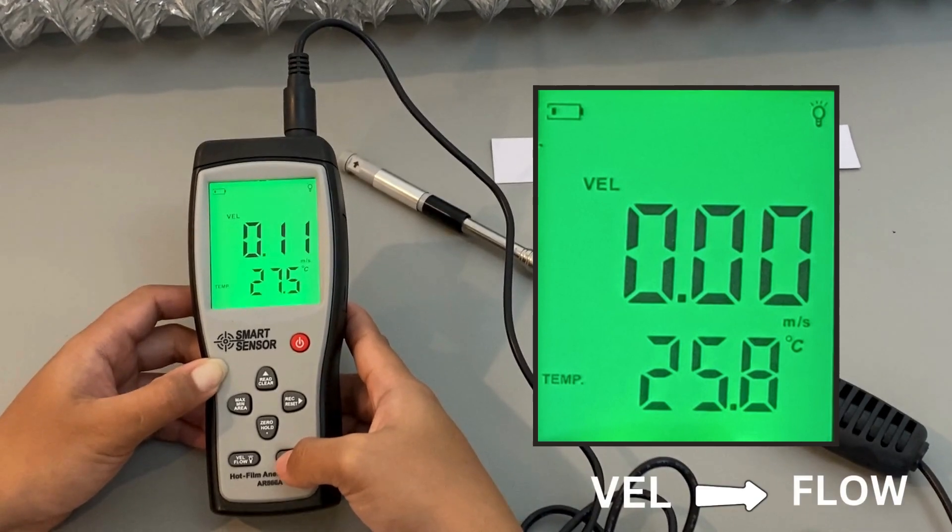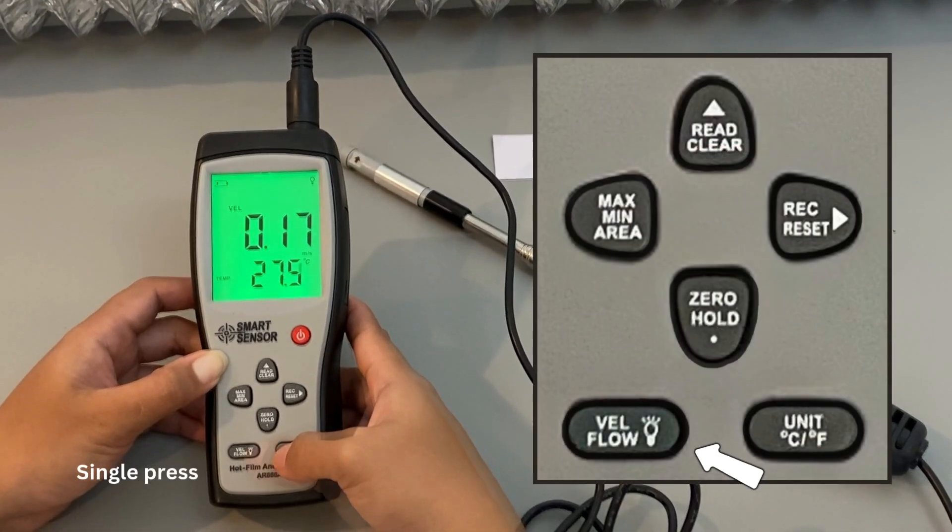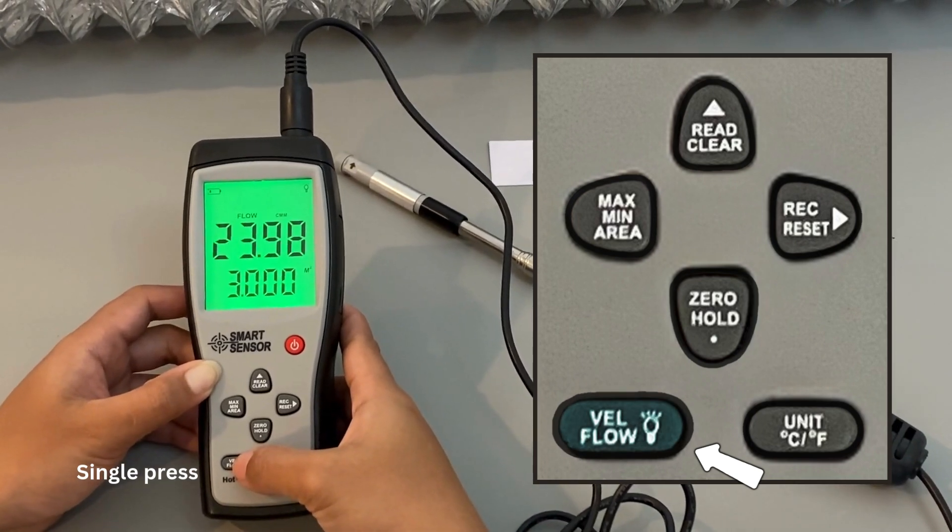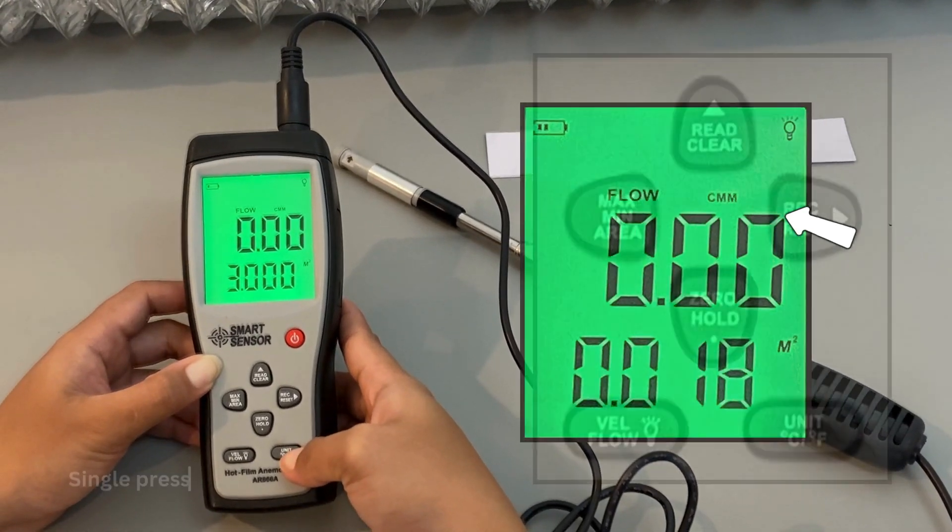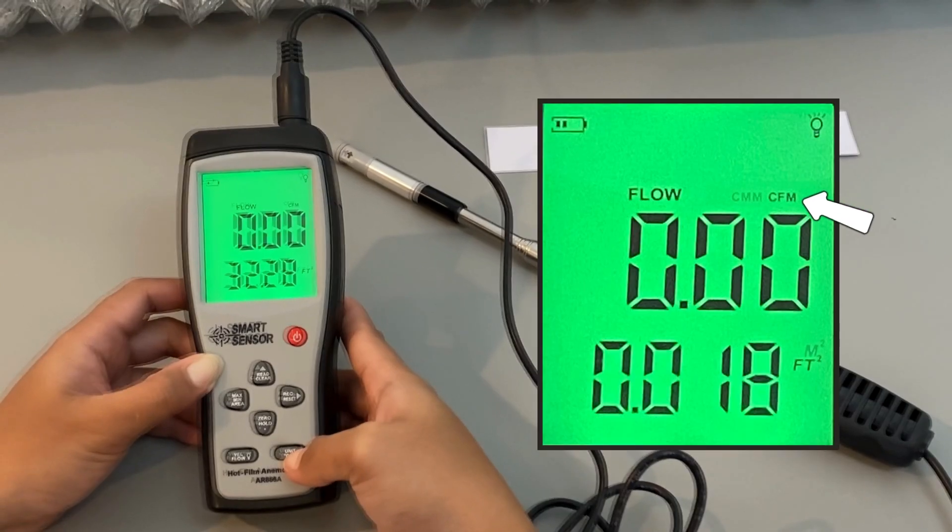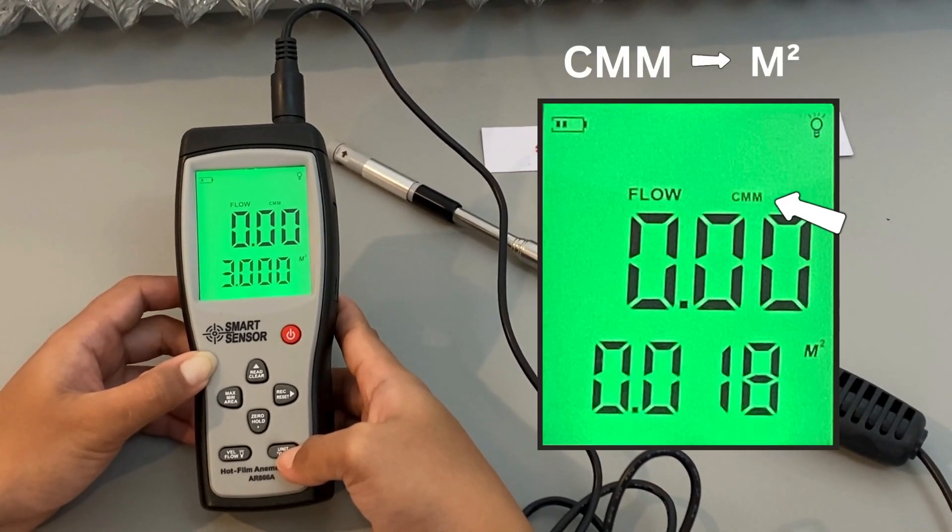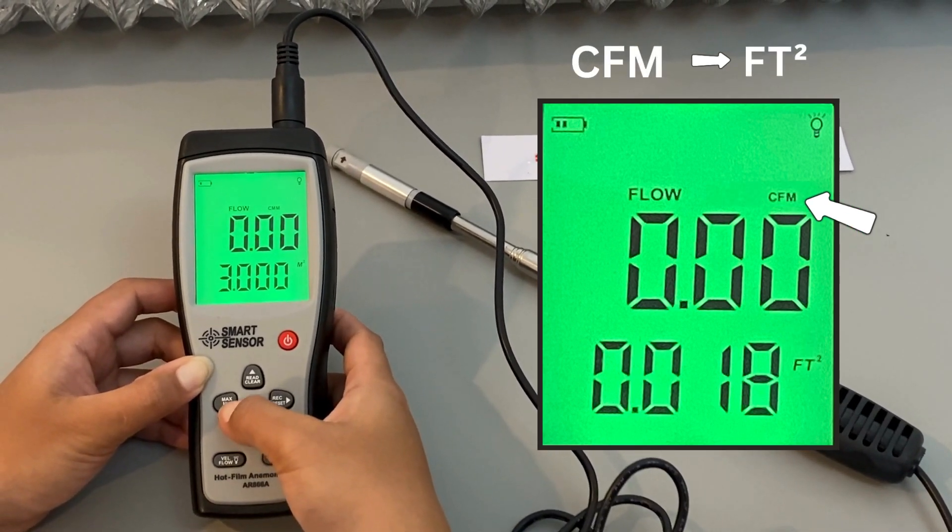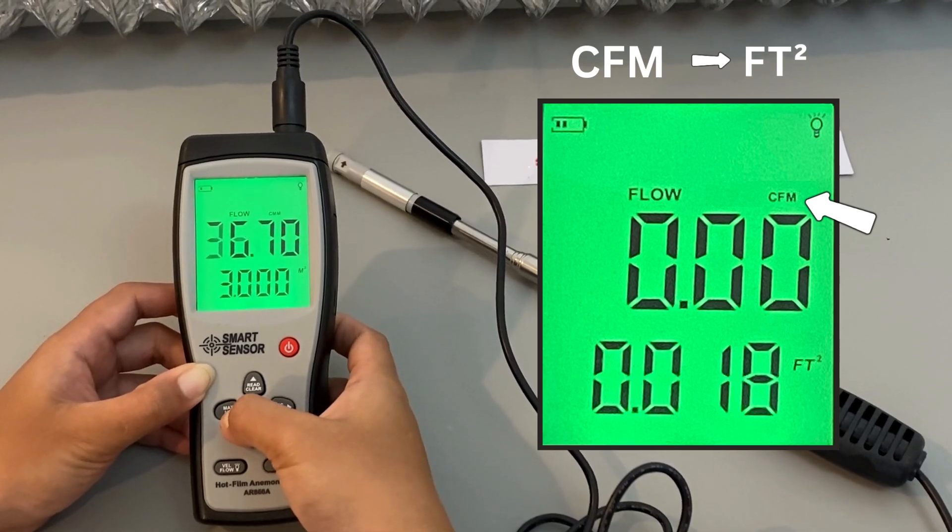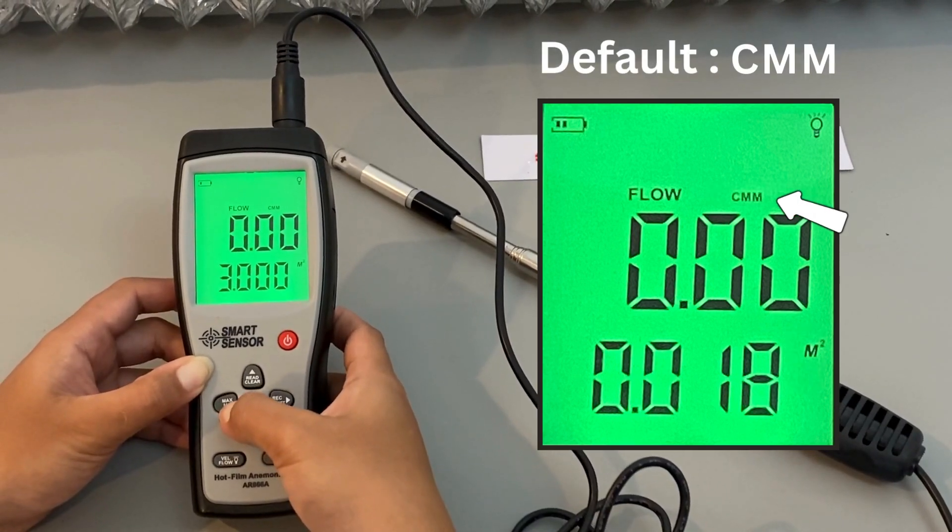To switch from velocity measurement to air flow measurement, simply press the flow button. To change the wind flow unit, press the unit button. Each press will toggle between CMM or CFM. CMM or cubic meters per minute is for square meters, while CFM or cubic feet per minute is for square feet. By default, the unit is set to CMM.